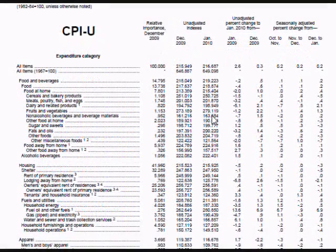They add up the prices in the basket of goods, compare it to the prices from 1982 to 1984, generate an index percent of change in prices, and then compare that index number to the previous month's index number.